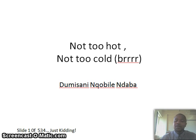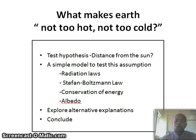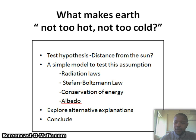So, I take it you want to know what makes the Earth the right temperature. In order to figure that out, we first need to build a climate model based on the atmosphere. Then we'll compare the findings to other planets closest to Earth. To break this down, we'll test the hypothesis: is it the right distance from the sun that makes the Earth the right temperature? We'll build a simple model based on radiation laws, the Stefan-Boltzmann law, the conservation of energy, and albedo. Then we'll explore alternative explanations and conclude.